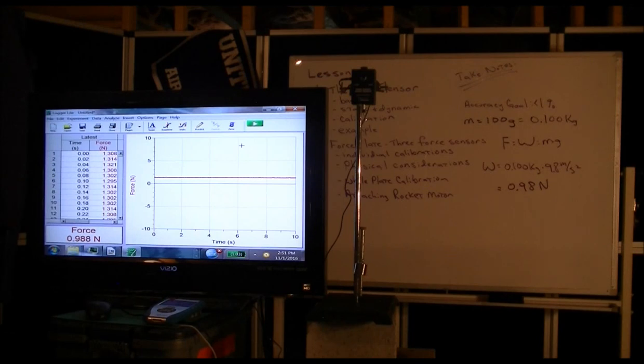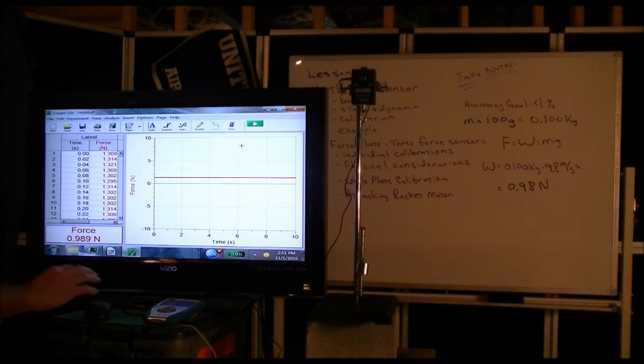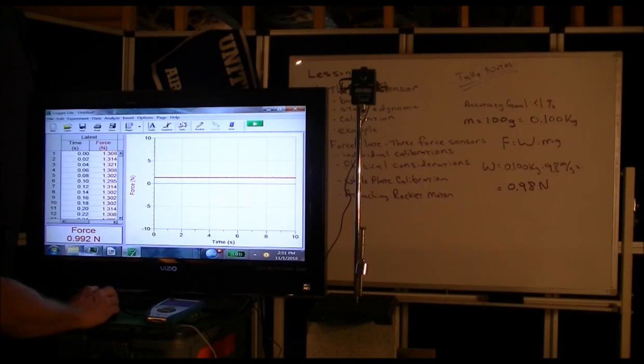which is very close to what we were expecting as the 0.98 newtons. But that's still about a 1 or 1.2% error and we're really trying to get our accuracy to better than 1%. So how do we then make additional adjustments so that we're accurate?